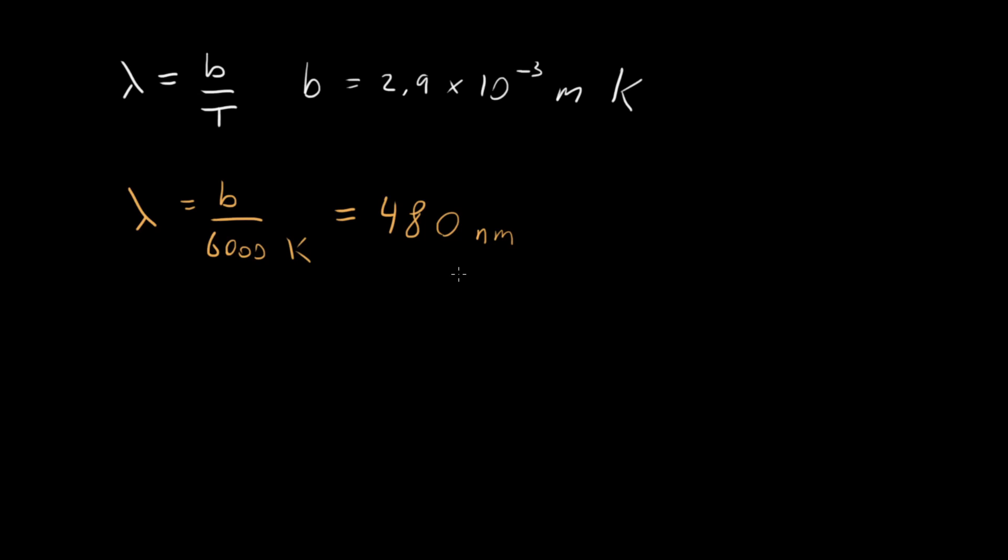Because 480 nanometers is exactly the wavelength of blue light. So what do we learn from this? We learned that the peak wavelength that the sun emits is blue light, which is also exactly in the range of light that we're able to see with our eyes.